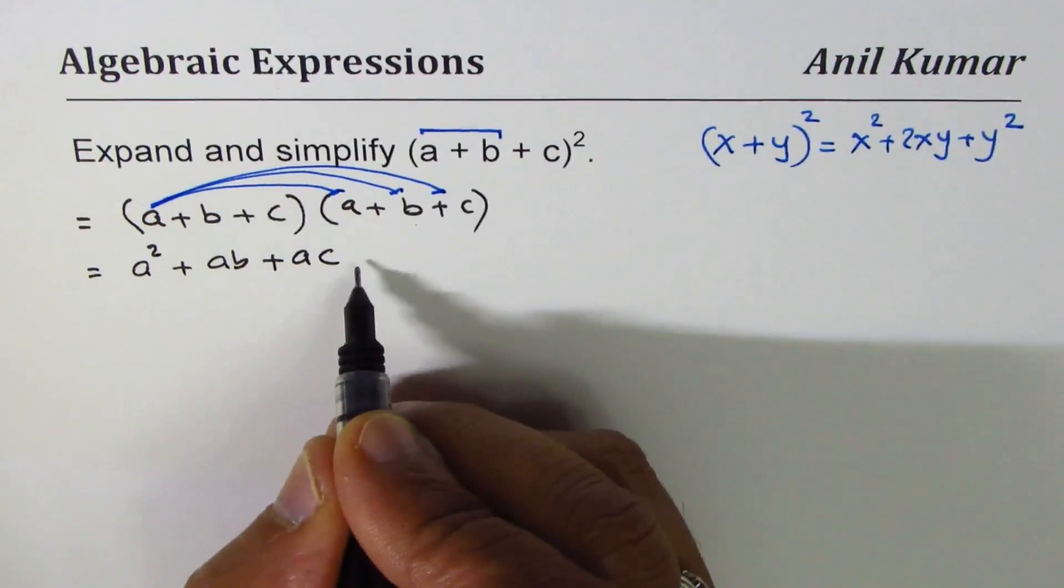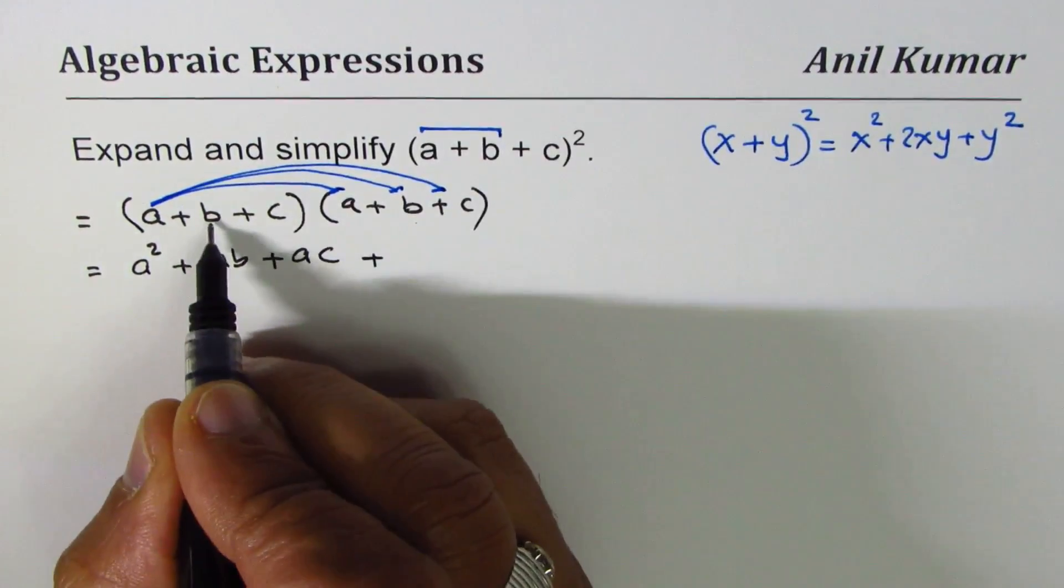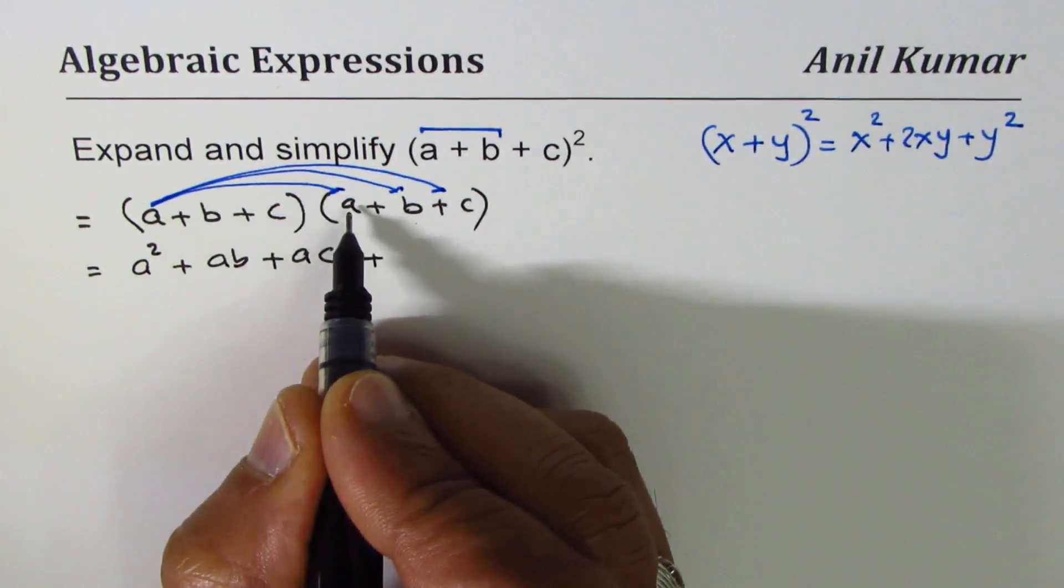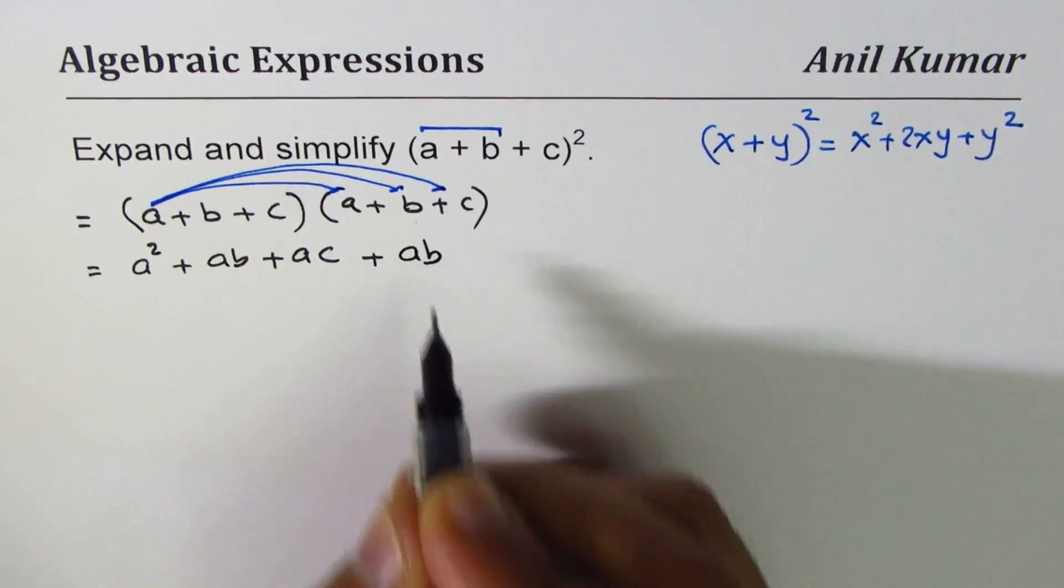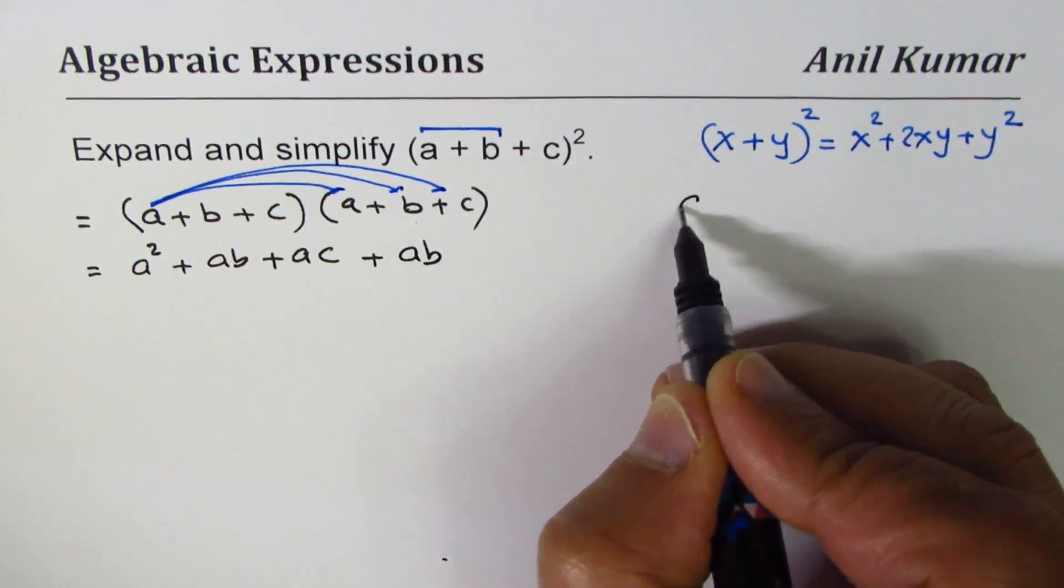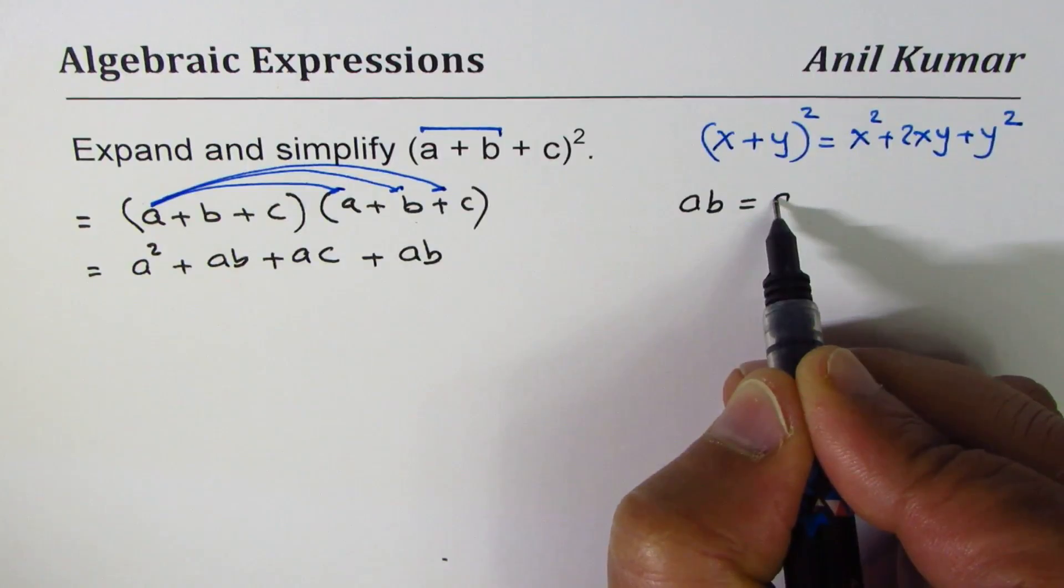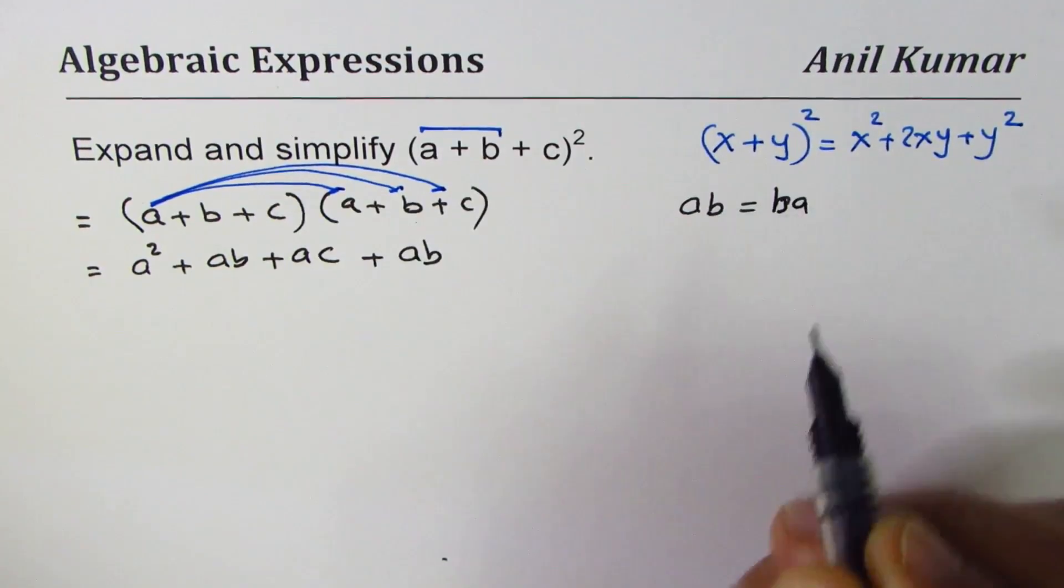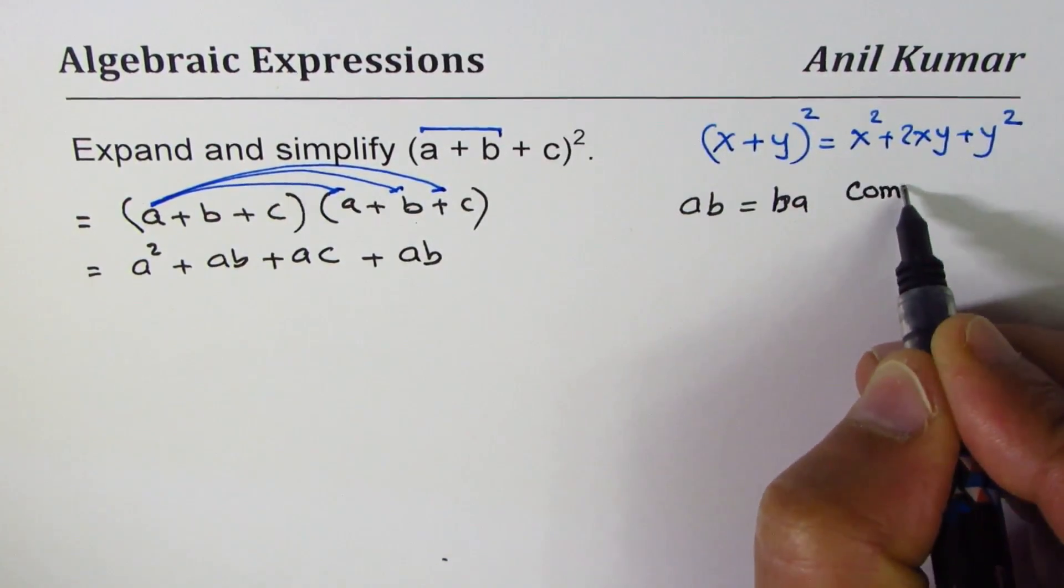Multiplying by a gives me a² + ab + ac. Now let's multiply by b. If you multiply b and a you get ba, but you could write this as ab since ab is same as ba because of the commutative property.